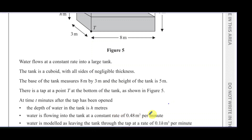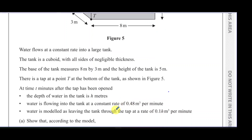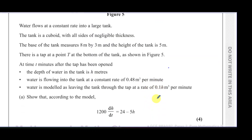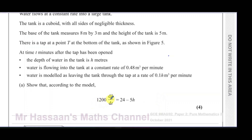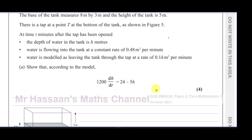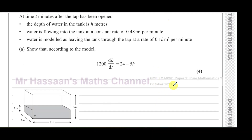Water is flowing into the tank at a constant rate of 0.48 meters cubed per minute — that's a rate of change of volume. Water is modeled as leaving the tank through the tap at a rate of 0.1h meters cubed per minute. We have to show that according to the model, 1200 dh/dt equals 24 minus 5h, by setting up this differential equation from the information given.